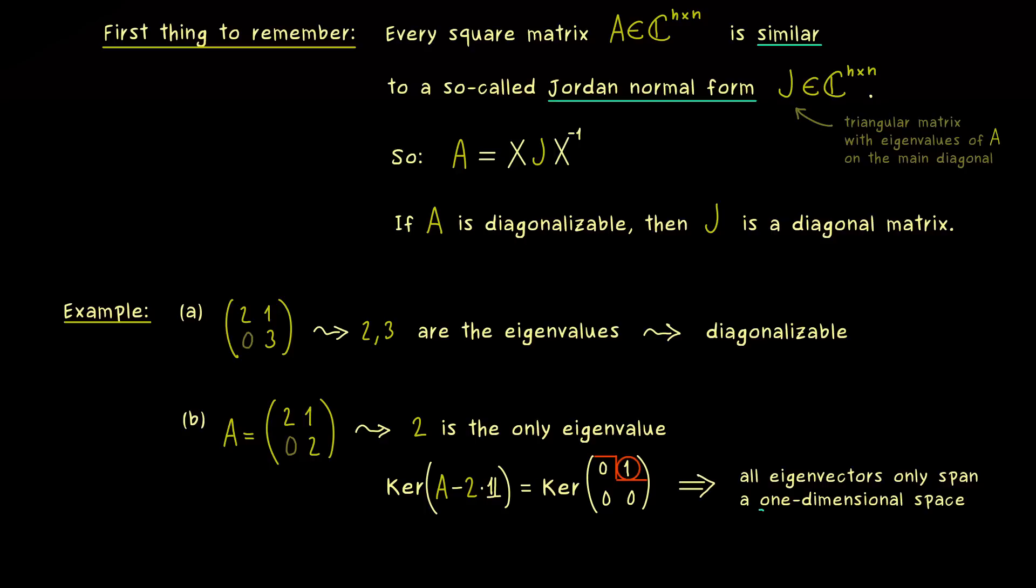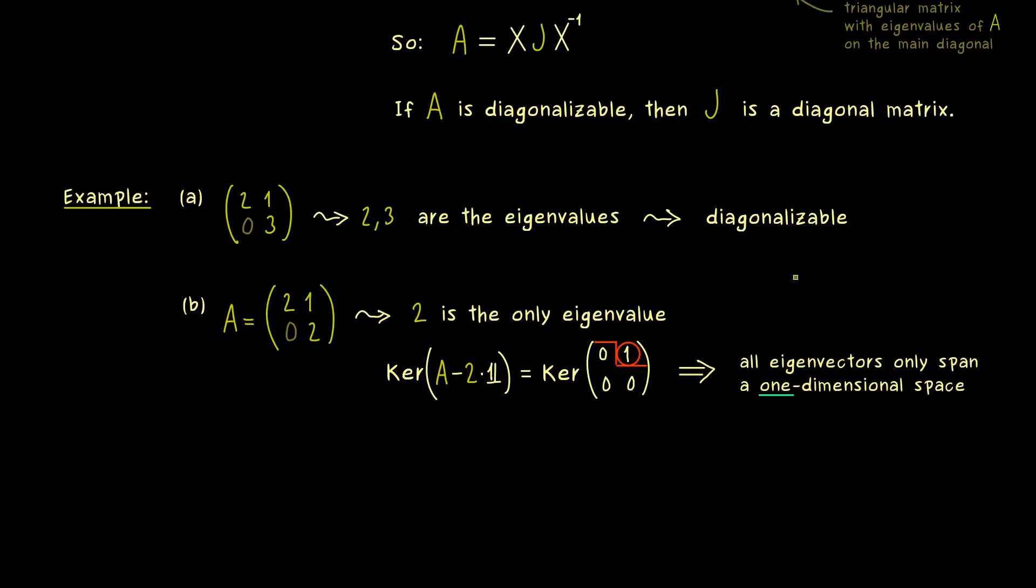Hence we cannot span the whole two dimensional vector space with eigenvectors, and therefore the matrix A is not diagonalizable. So you see, this is a simple example. We don't find enough eigenvectors to form this matrix X.